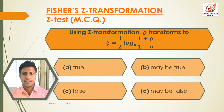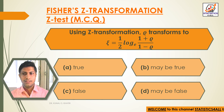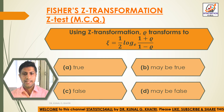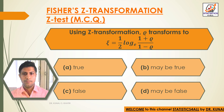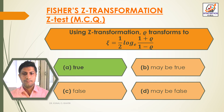Next question. Using Z-Transformation, rho transforms to Z is equal to half log of (1 plus rho) divided by (1 minus rho), to the base E. Option A: True. Option B: May be true. Option C: False. Option D: May be false. Here we have the answer: Option A, True.